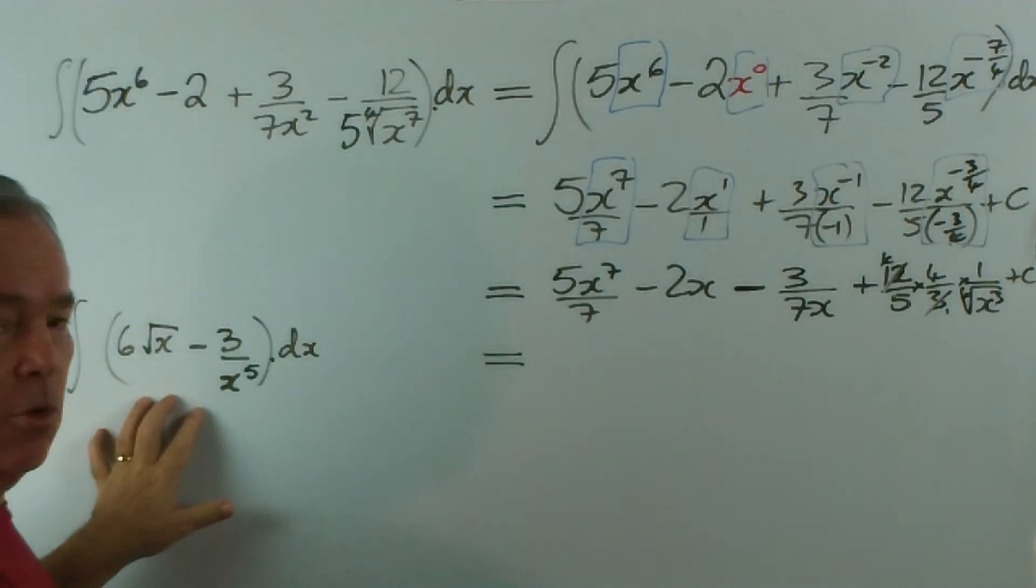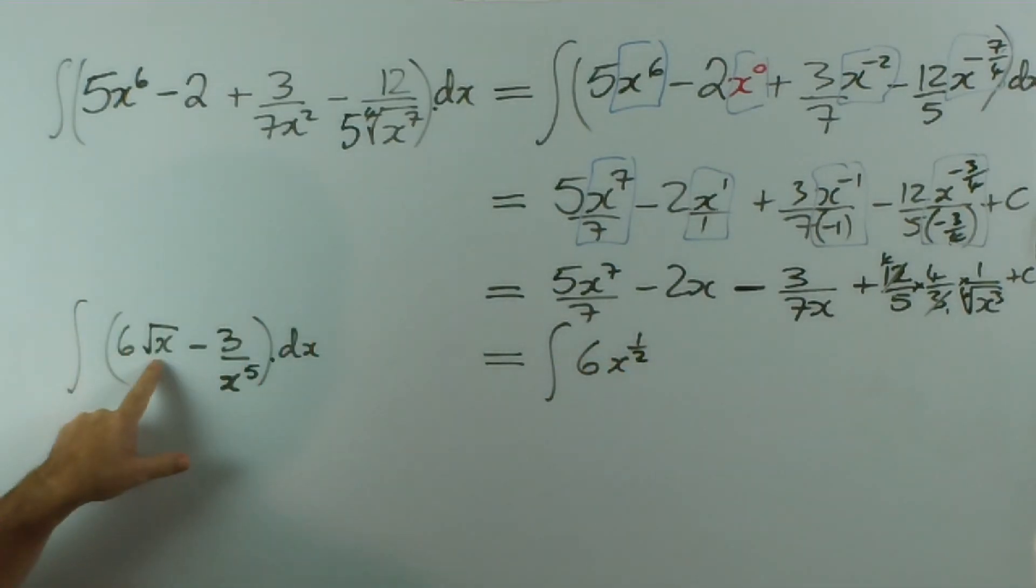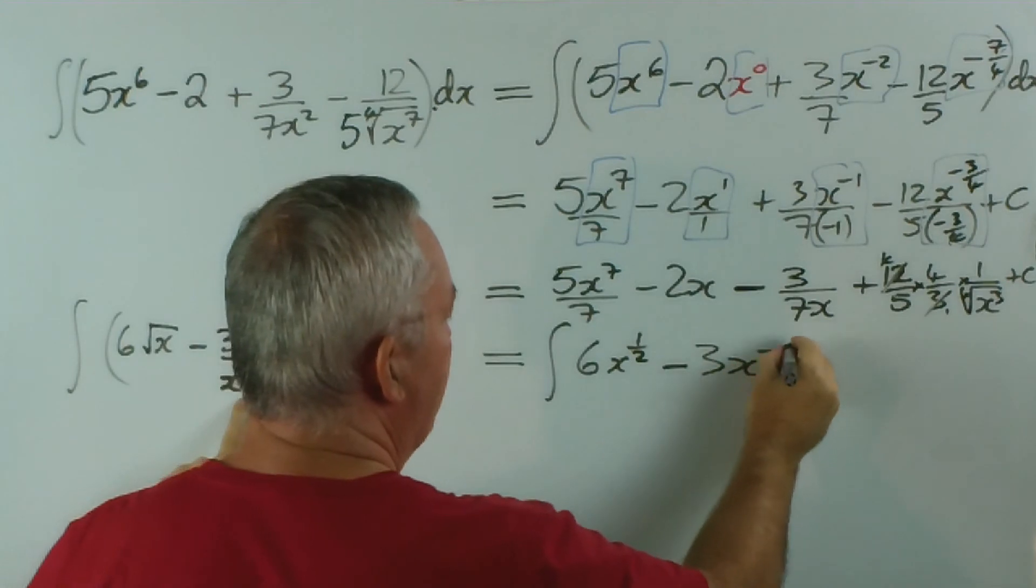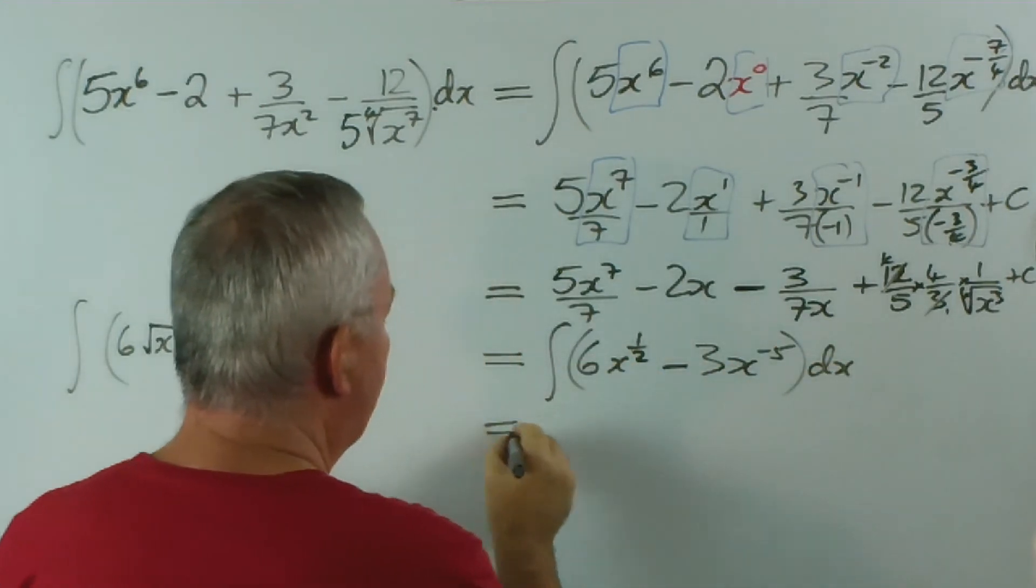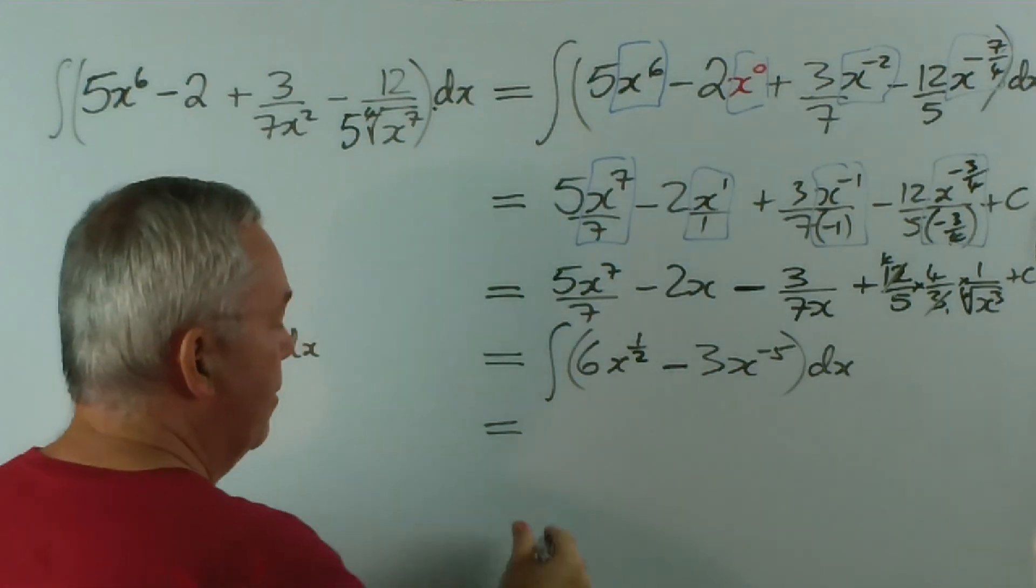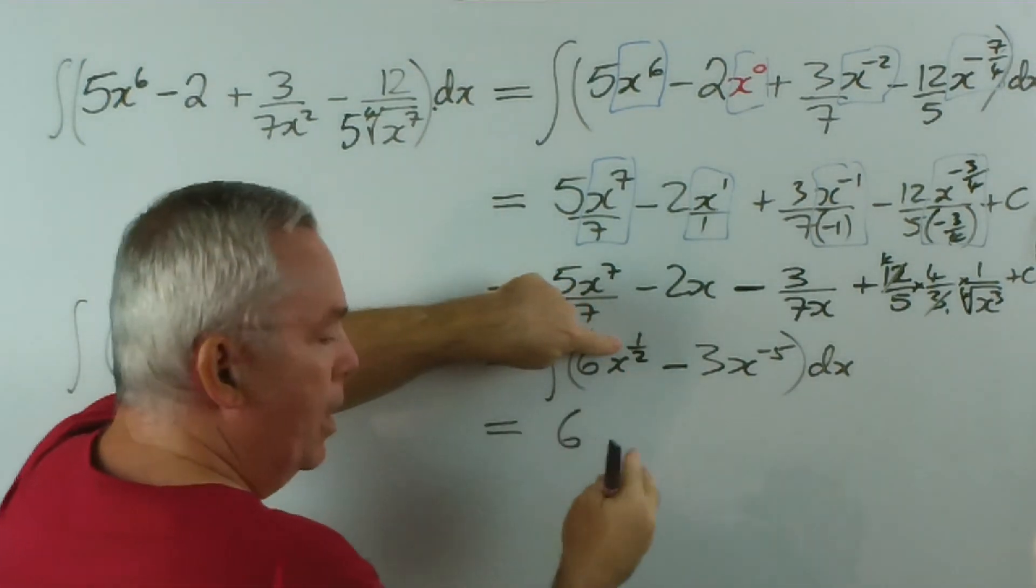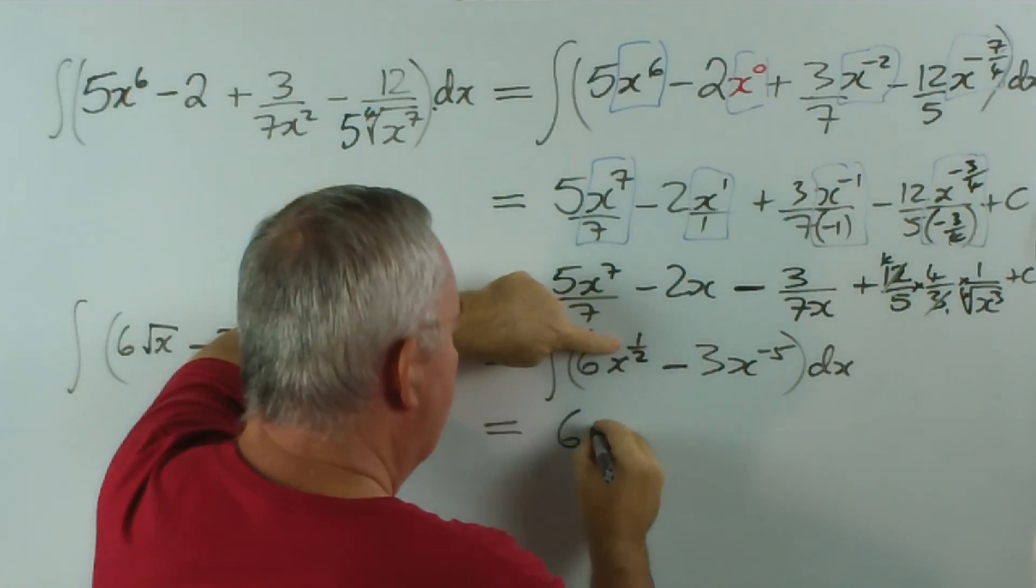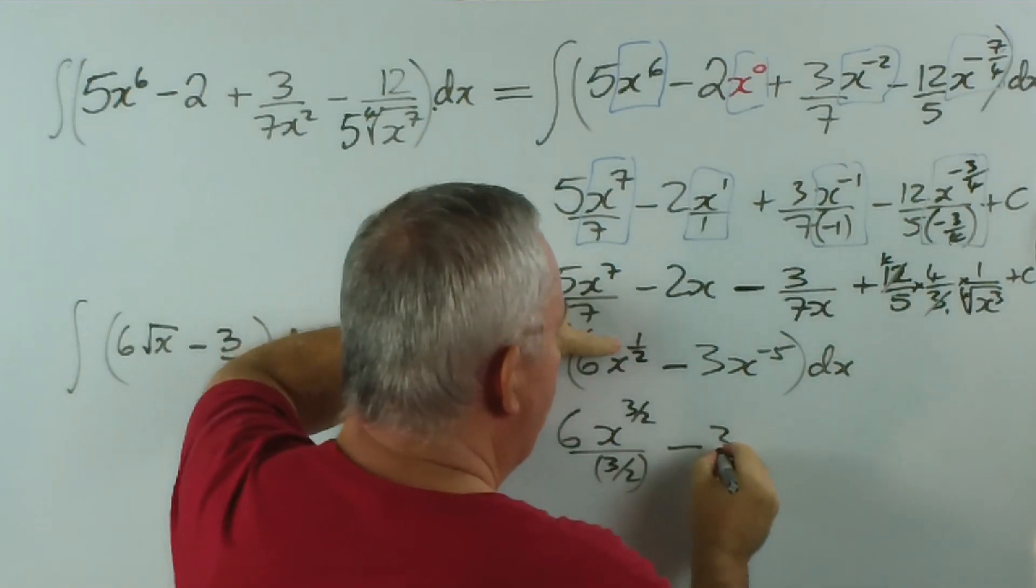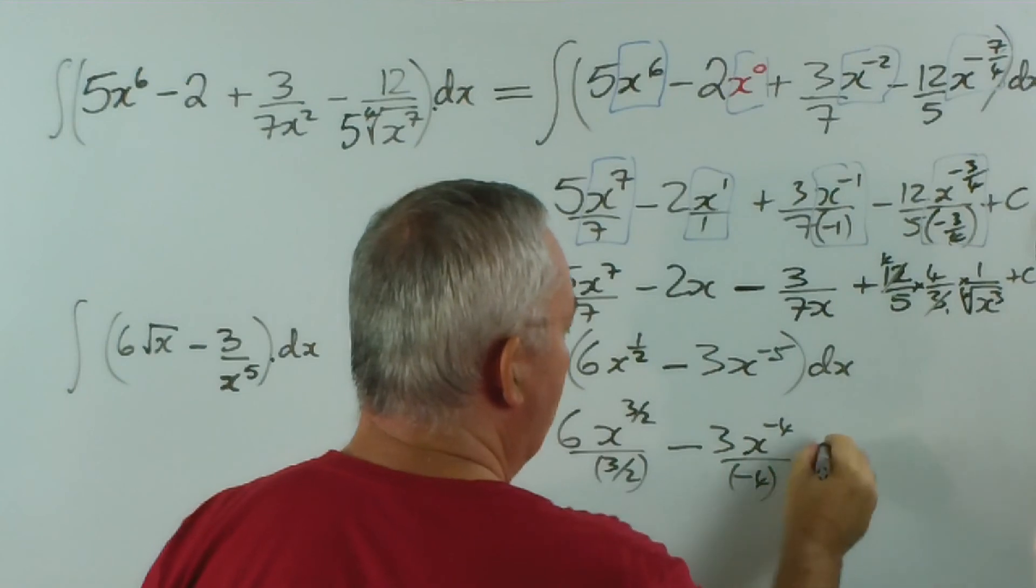Let's do this one a little bit more rapidly. We're integrating six times x to the half—that's what the square root is—minus three x to the minus five dx. Now they're both in index form, so we can perform the integration using that second method. That is, we'll leave the six, we add one to the index. So, because we're talking in halves, we add two halves to one half and we get three halves, so it's x to the three halves divided by three halves. Minus three, and add one to this, and we get x to the minus four over minus four, plus c.